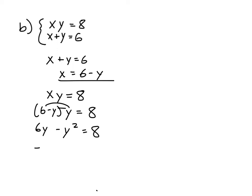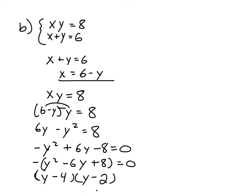And then equals 8. I'm going to bring this negative y squared out front and then plus 6y and subtract 8 from both sides of the equation. I'm going to go ahead and pull out a negative sign from all this: negative y squared minus 6y plus 8. And now factor.